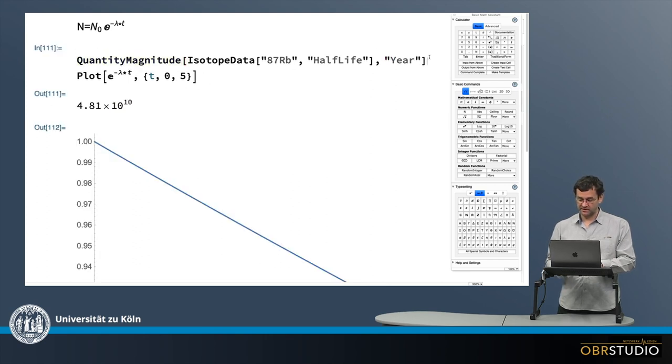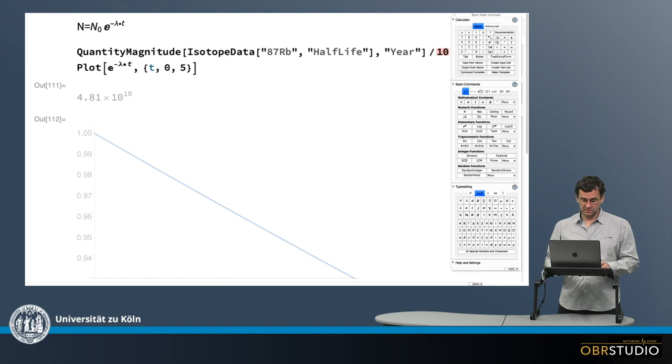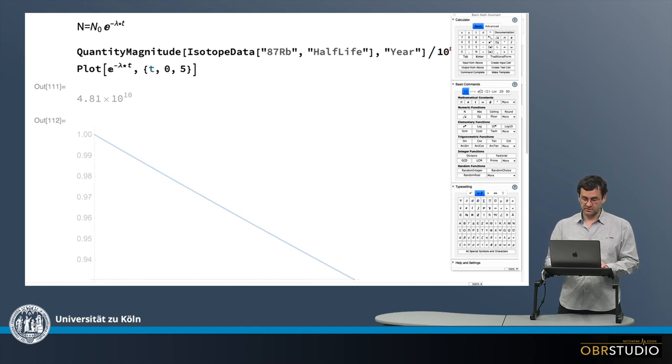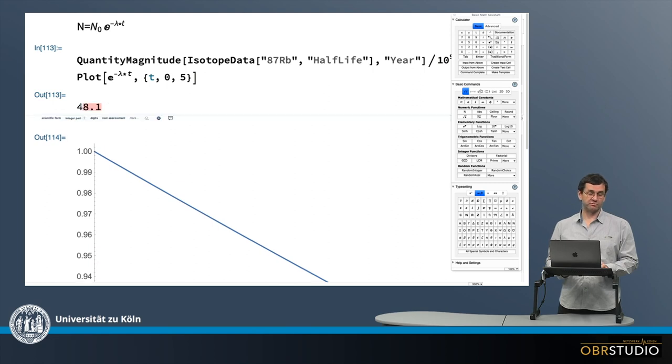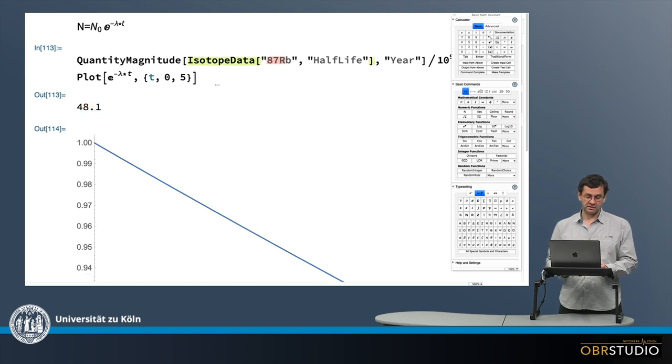And therefore I use another command to recalculate this into years. And then I get this into years and divided by 10 to 9. And then this will be the half-life in billions of years, which is 48.14 for rubidium-87. I could put in any other isotope and get the corresponding half-life.